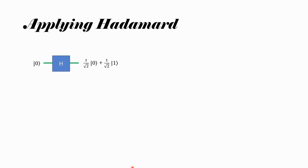To understand that, we should first understand what happens when Hadamard gates are applied. We have discussed this previously, but just to recap: when the qubit is in state |0⟩ and a Hadamard gate is applied, that qubit transforms to a superposition state of |0⟩ and |1⟩ with amplitude 1/√2 for each. Another important point is that the Hadamard gate is its own inverse. So if the qubit is in this superposition state and Hadamard is applied again, it goes back to the original state |0⟩.